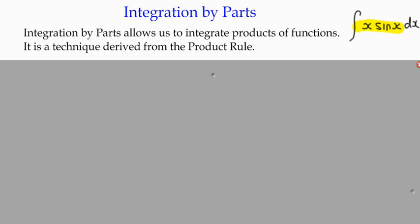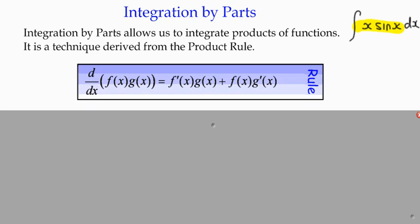We actually derive this rule from the product rule. So the product rule looks a bit like that when we're using function notation f of x and g of x. The derivative of a product of terms f of x, g of x, on the right-hand side, is the derivative of one term multiplied by the other function plus the other function multiplied by the derivative of the second. So we would normally think of that as u dash v plus u v dash.